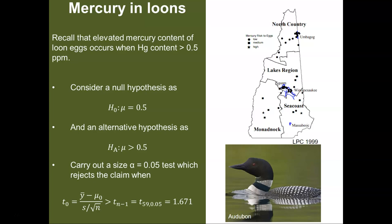Now we're going to go back to the loon example and do a hypothesis test with the data we have comparing it to some value. Remember that the elevated mercury content of loon eggs occurs when the mercury content is greater than 0.5 parts per million. Let's consider our null hypothesis that the mean value mu is equal to 0.5, and our alternative hypothesis will be a one-tailed test that states the value mu is greater than 0.5.